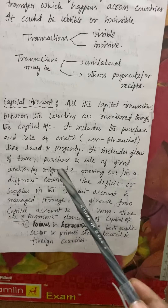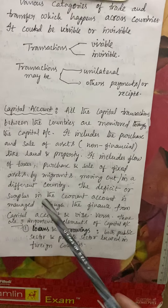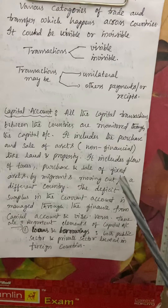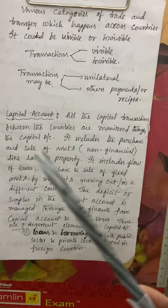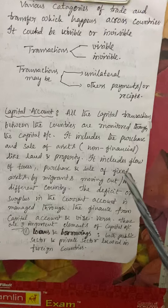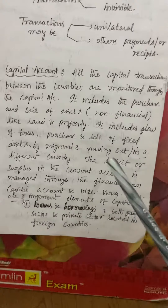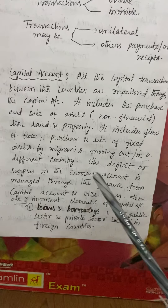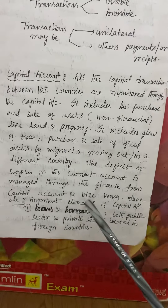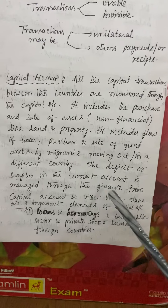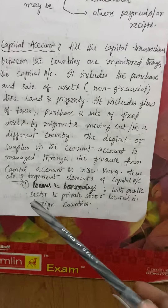The capital account includes the flow of taxes, purchase and sale of fixed assets, and transactions by migrants moving into or out of the country. Any purchases or sales of fixed assets by migrants are calculated in the capital account. Additionally, any deficit or surplus in the current account is managed and funded through the capital account.